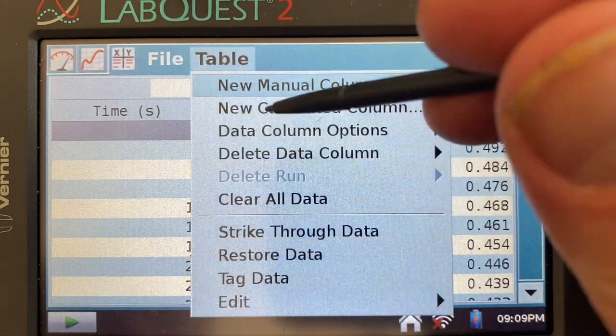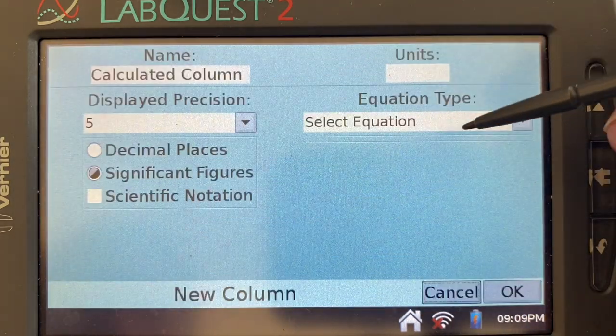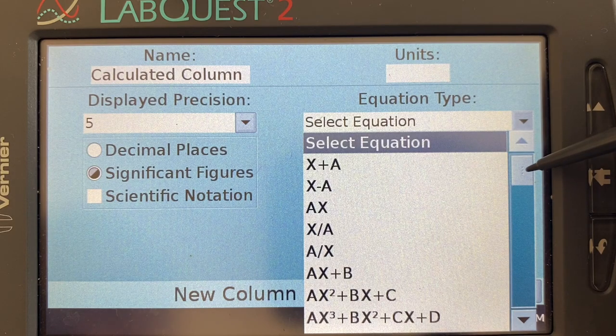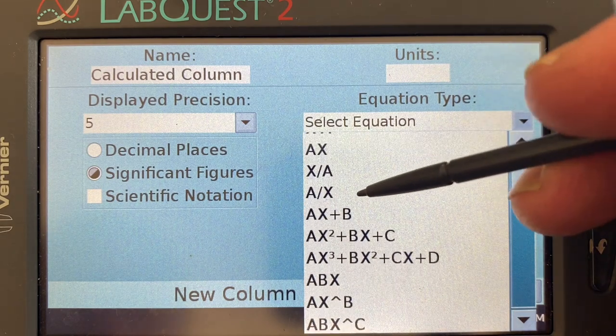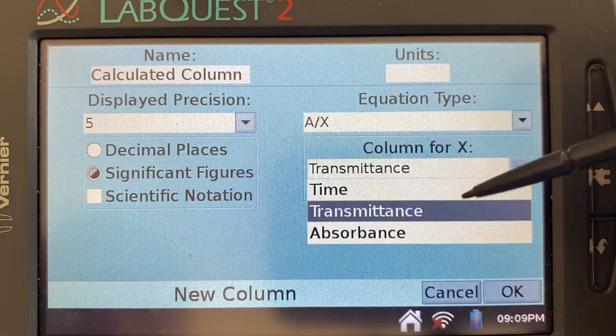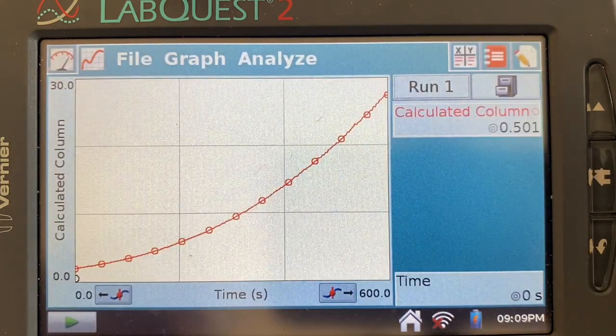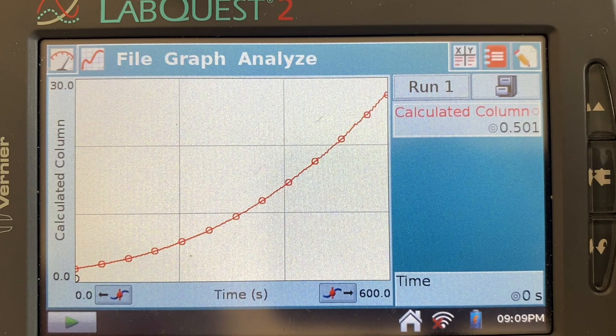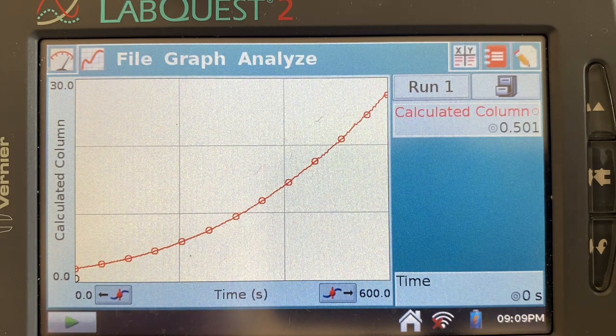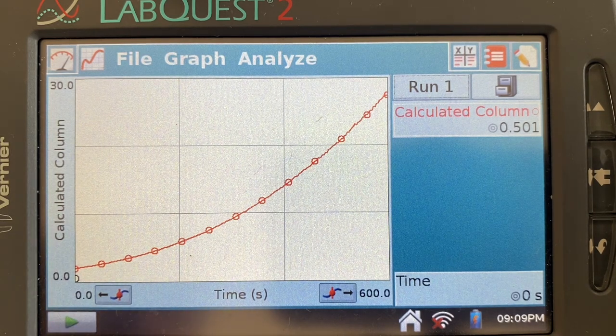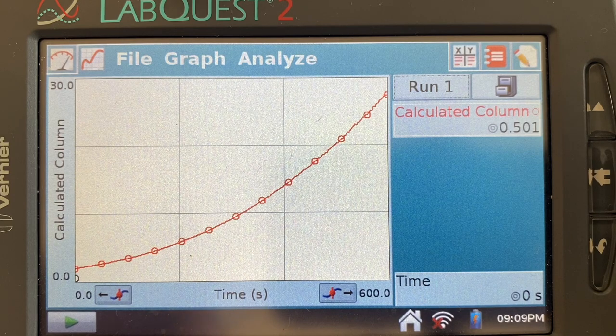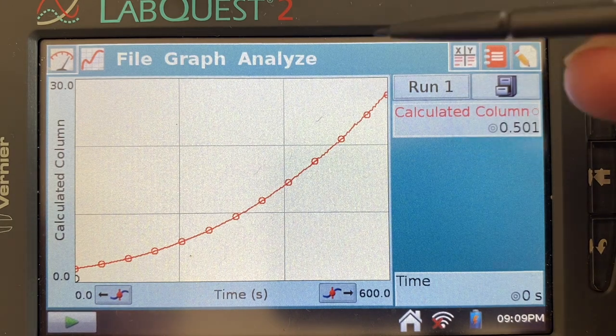So we'll go to Table, New Calculated Column. All right, and the first one I see here is the inverse of the absorbance, and so we'll hit OK. And that is the one-over concentration versus time graph. And that is also clearly not linear. So that indicates that it is not a second-order reaction.